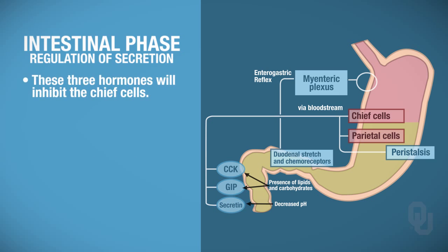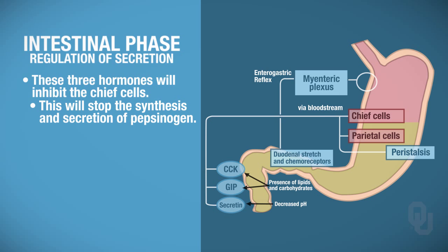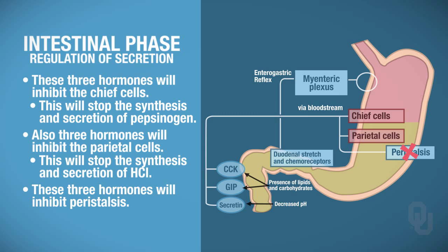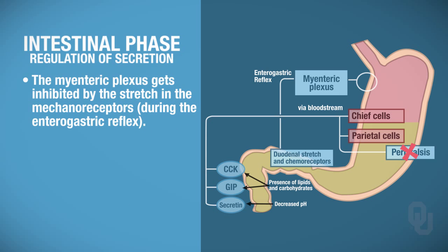All three of these hormones are going to inhibit chief cells — if you inhibit chief cells, there's no pepsinogen being synthesized and secreted. They're going to inhibit the parietal cells so that there's no hydrochloric acid being synthesized and secreted. They're going to inhibit peristalsis, so there's no more movement of the food. The other thing that gets inhibited — due to the stretch and chemoreceptors in the enterogastric reflex — is that the myenteric plexus gets inhibited as well.